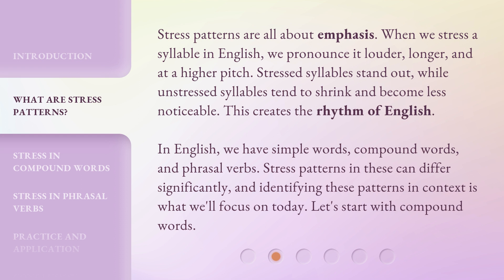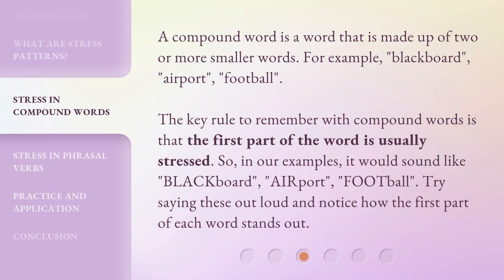Let's start with compound words. A compound word is a word that is made up of two or more smaller words. For example: blackboard, airport, football. The key rule to remember with compound words is that the first part of the word is usually stressed. So in our examples, it would sound like: BLACKboard, AIRport, FOOTball. Try saying these out loud and notice how the first part of each word stands out.